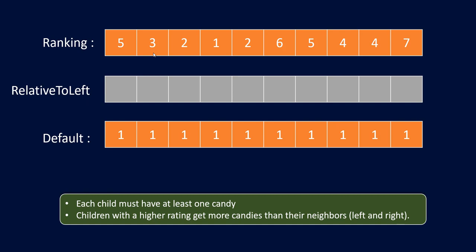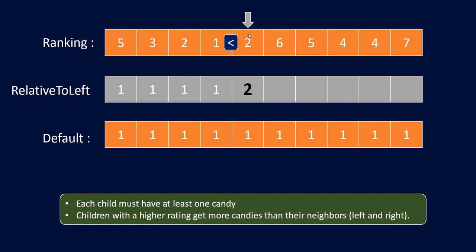Let's take the left value. We are going to compare the ranking for the current child with its left neighbor, and so we will start from the first index. By default for the 0th person, we will add 1. Now when we compare 3 with 5, we see that the current child has a lower rating than its left neighbor, so we can give him one candy. Similarly, since 2 is less than 3, there is no need to give more candies to this person — we can only give him one candy. Now when we come to a child with a higher rating than its left neighbor, we need to give more candies.